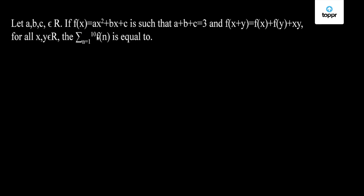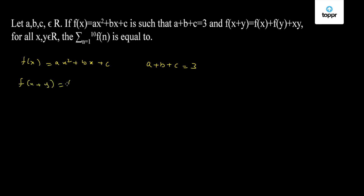Given that f(x) = ax² + bx + c such that a + b + c = 3, and one more given condition is f(x + y) = f(x) + f(y) + xy.